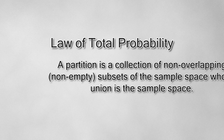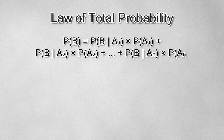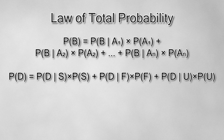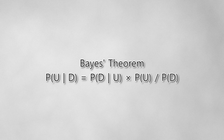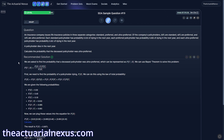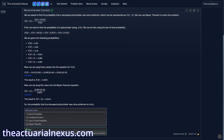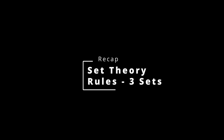A partition is a collection of non-overlapping subsets of the sample space whose union is the sample space itself. In this example, the sample space is the set of all policyholders, which we partition into S, F, and U. Using the law of total probability to solve for the probability of D, we substitute S, F, and U for A₁, A₂, and A₃, and D for B. Plugging in the given values, we get that the probability of D equals 0.0071. We then go back to Bayes' theorem and solve for the probability of U given D, which turns out to be 0.0141. The set theory questions are pretty straightforward and this approach will generally work. To give you a sense of relative difficulty, this is one of the easiest questions on the platform, with over 85% of people getting it right on their first try.